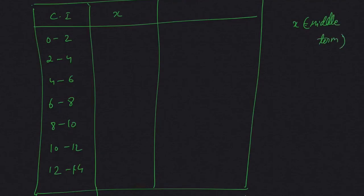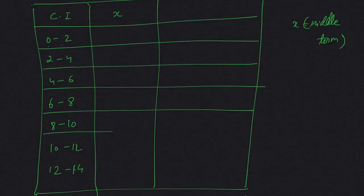What is the middle term of the class interval? Like for 0-2, the middle term is 1. If you want to calculate, X_I means X1, X2, X3, X4, X5, X6, X7.